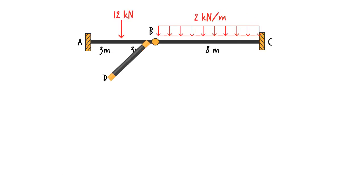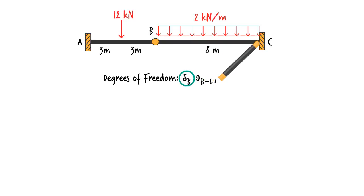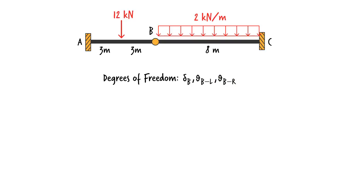The beam has three degrees of freedom: vertical displacement at B, rotation at the right end of AB, and rotation at the left end of BC. Why do we have two different rotations at B? Because the hinge permits one segment to rotate relative to the other, like a truss joint. This results in a discontinuous slope at B, meaning the left and right slopes at the hinge are not going to be the same.